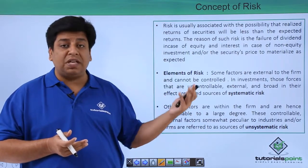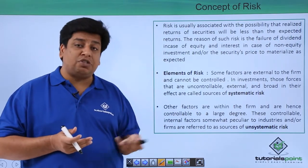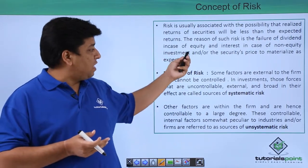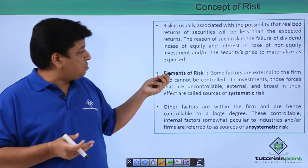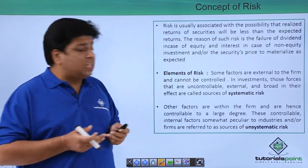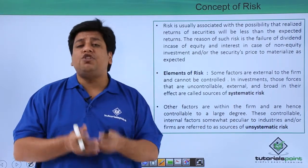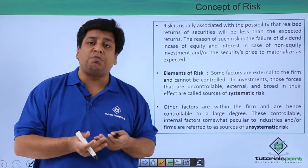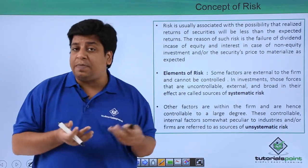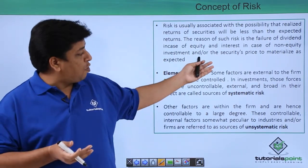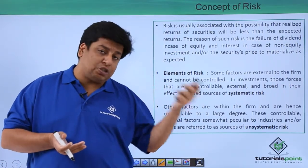The return we get from equity is dividend, and the return we get from debt, bonds, and debentures — everything which is non-equity — is interest. So whatever we get as dividend from equity and interest from non-equity investments may not materialize as expected. If you expected a certain amount of dividend and you're not getting it, or you expected a certain amount of interest from your non-equity investment and you are not getting it, that is risk.